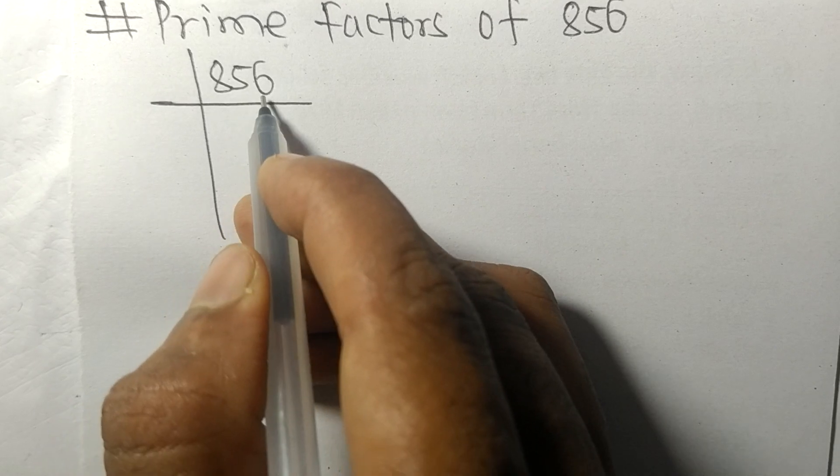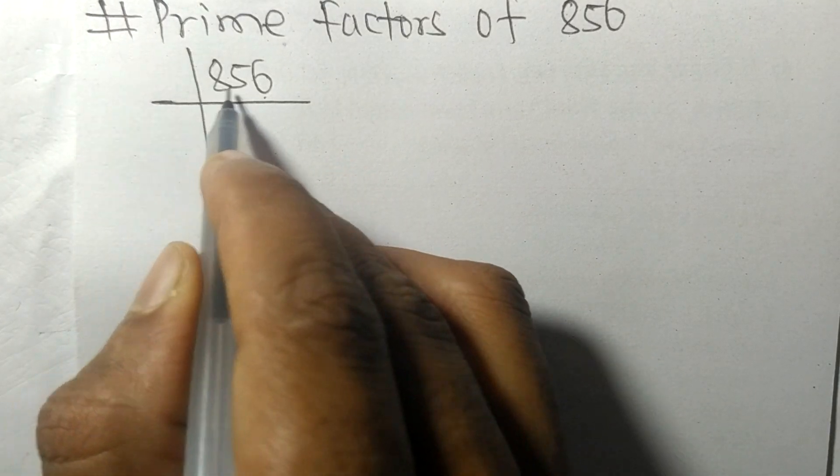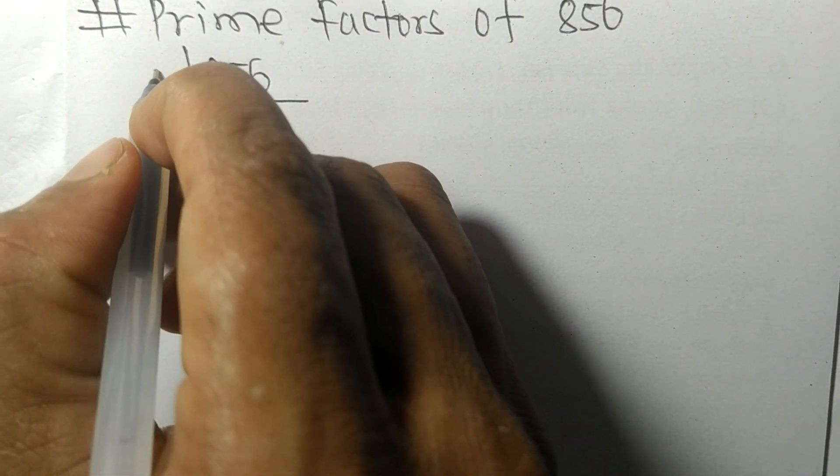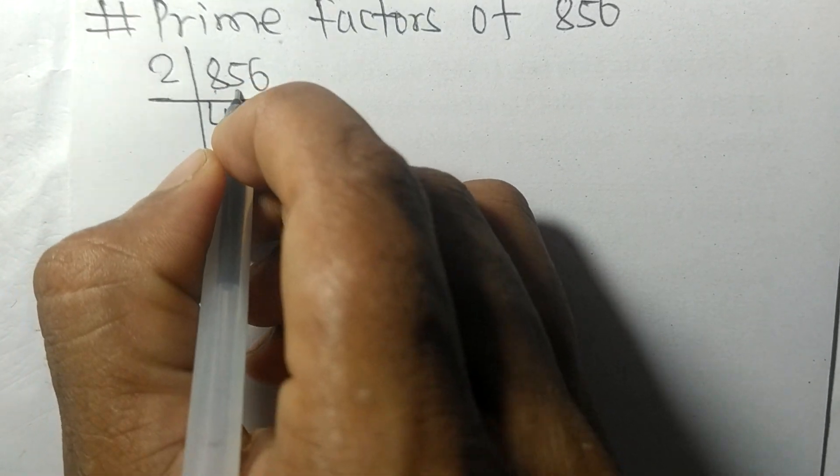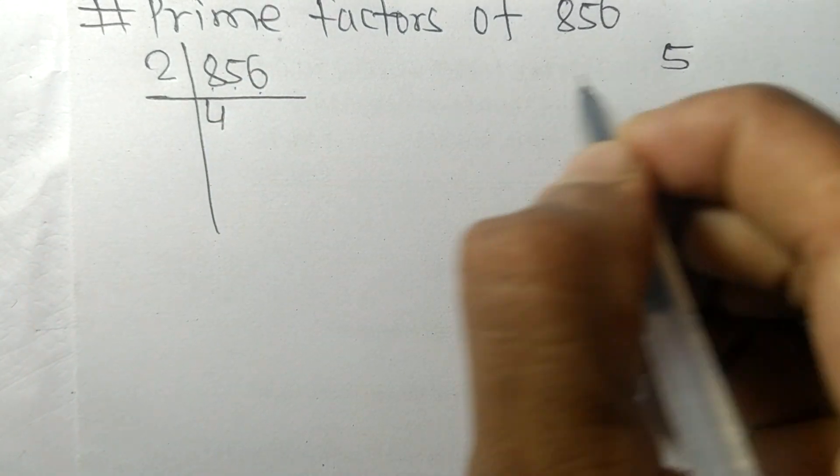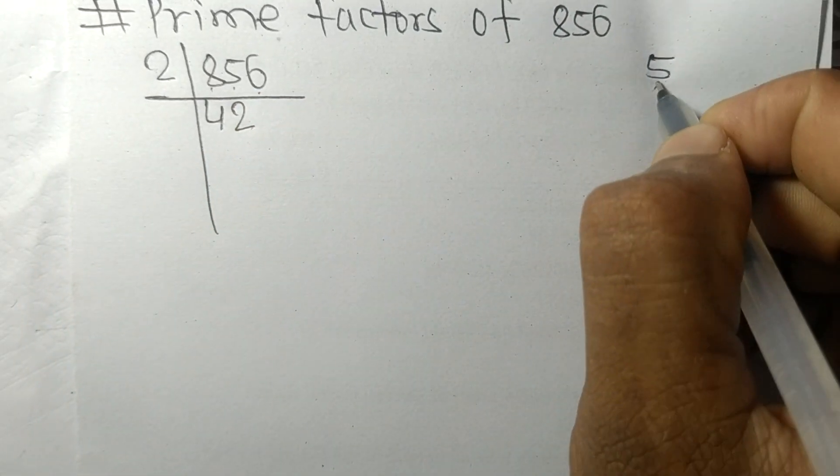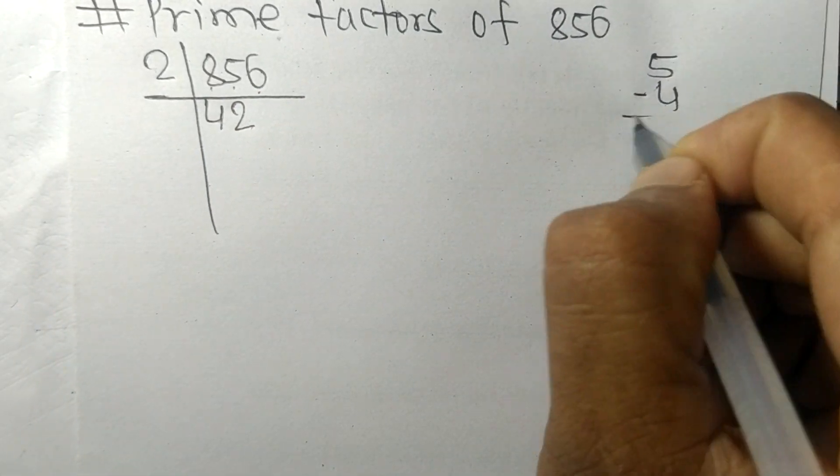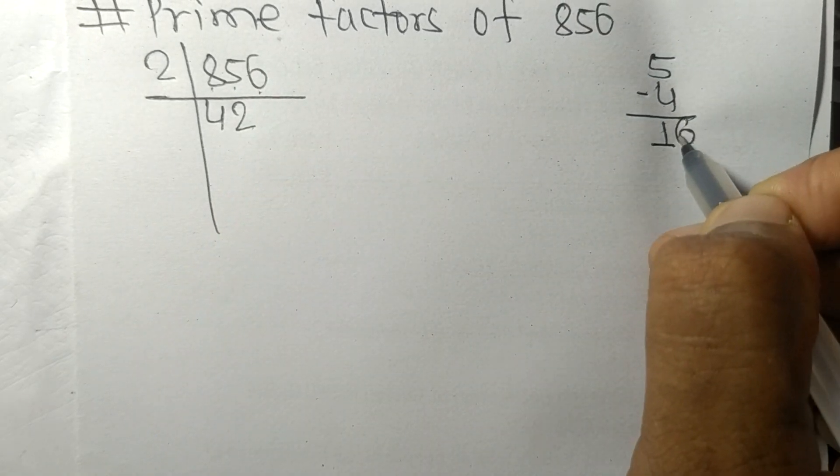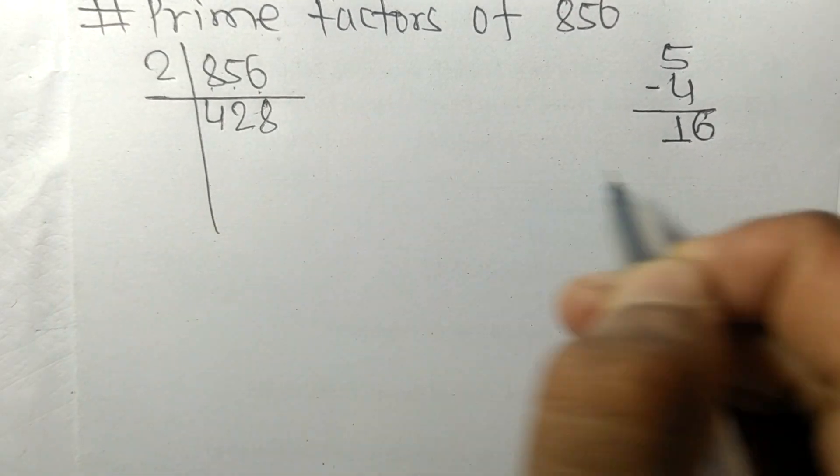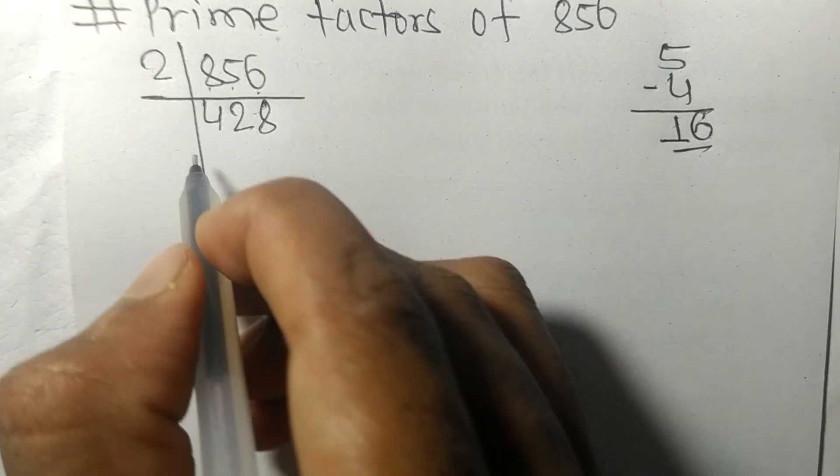2 times 4 means 8. Now we have 5. 2 times 2 means 4. On subtracting we get 1 and this 6, 16. 2 times 8 means 16.